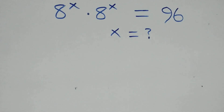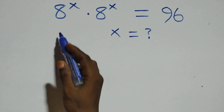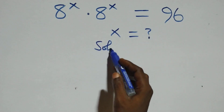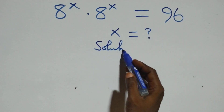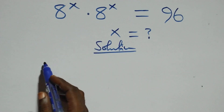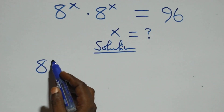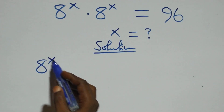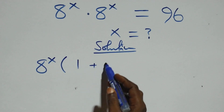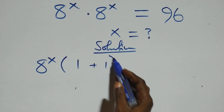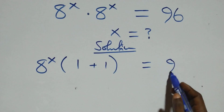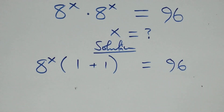Hello, you are welcome. How to solve this nice exponential equation. From what we have here, we can factor 8 raised to the power x out, giving us 8 raised to the power x into bracket 1 plus 1, which equals 96.